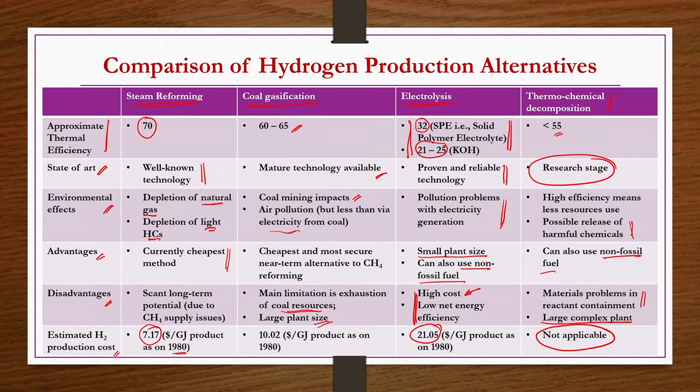From all these comparison points — efficiency, state of art, environmental impacts, advantages, disadvantages, and production cost — steam reforming is the better option for hydrogen production based on current existing technology.